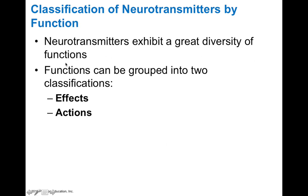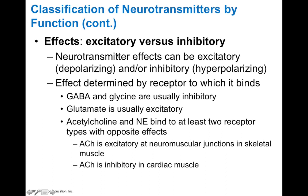Neurotransmitters exhibit great diversity of functions and we can group them based on their effects and actions. Effects can be either excitatory or inhibitory. Excitatory neurotransmitters are depolarizing and cause EPSPs, while inhibitory neurotransmitters are hyperpolarizing and cause IPSPs. The effect is determined by which neurotransmitter binds to which receptor. GABA and glycine are typically inhibitory because they bind to receptors that gate potassium and chloride ions, while glutamate is typically excitatory because it binds to receptors that gate sodium or calcium ions.